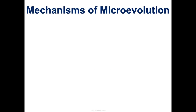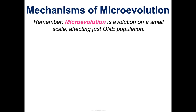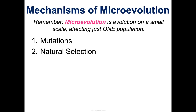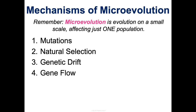In class we're going to pause and practice this, but for the sake of the video I'm going to keep going. I want to talk about some mechanisms of microevolution. Remember, microevolution is evolution on a small scale, just looking at one population. There are five things that drive microevolution: mutations, natural selection, genetic drift, gene flow, and non-random mating. We've already talked about the first two, but I'll hit the highlights again and then dive deeper into the other three.